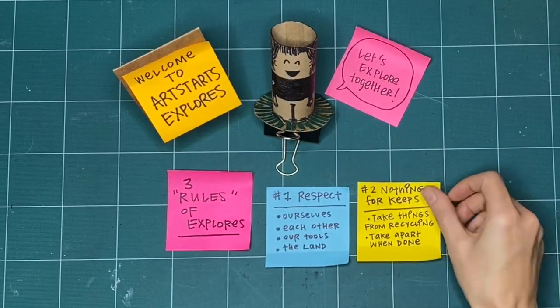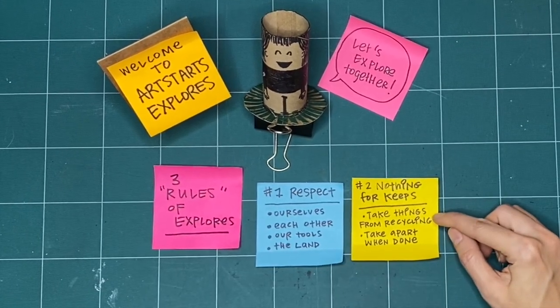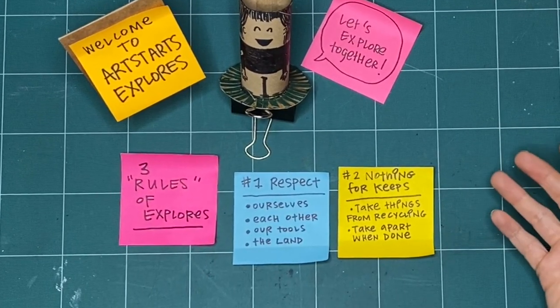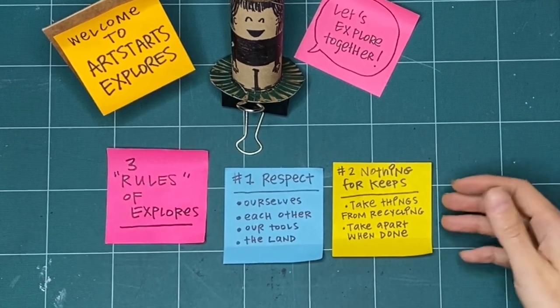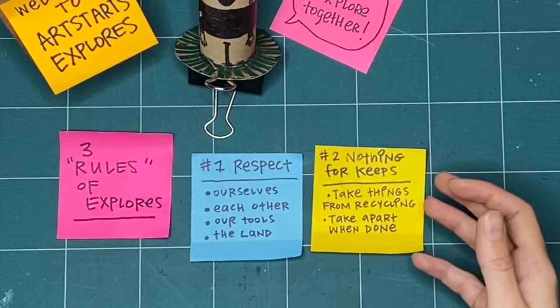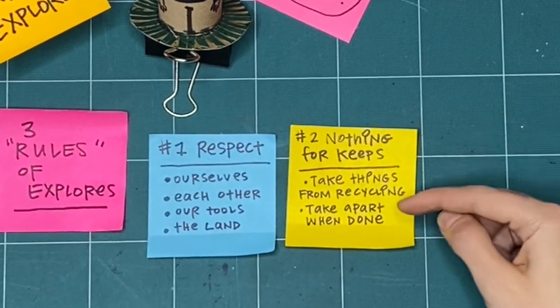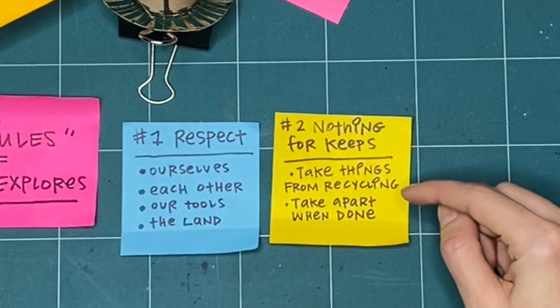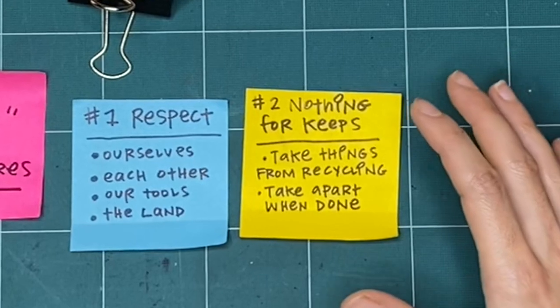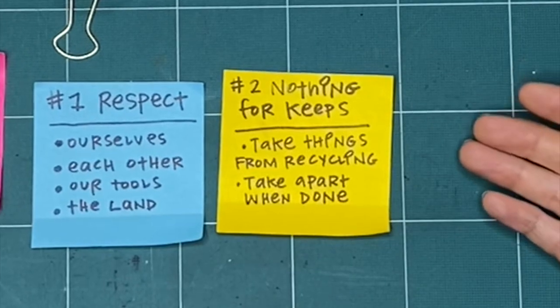The second rule is that nothing is for keeps. I encourage you whenever possible to take things from the recycling bin. You can take paper that's already been drawn on, or has writing on the back, or is ripped. And then you don't have to feel worried about ripping it up yourself, or crumpling it, or just trying something out. It doesn't have to be good or perfect the first time, because it's not for keeps. And when we're all finished, I encourage you to take it apart. That helps really make it so that it isn't for keeps. Because if you know you're going to take it apart at the end, you don't have to make any finished thing. You can try all the things and ways of making.